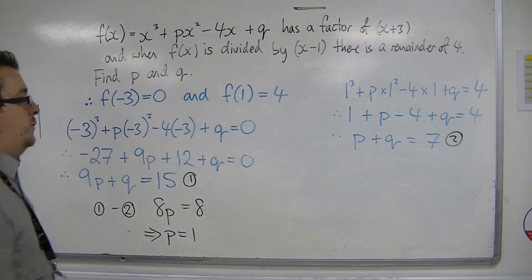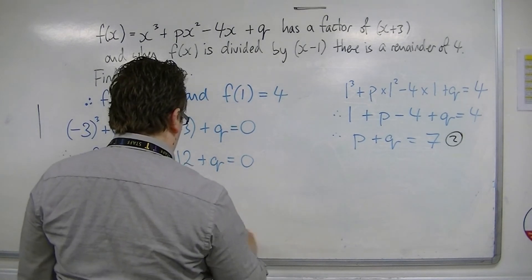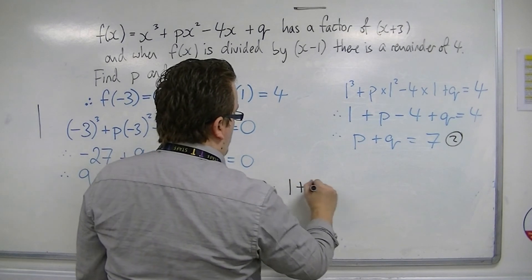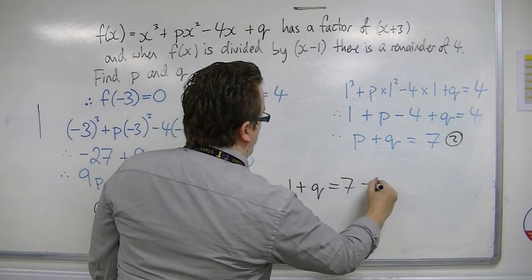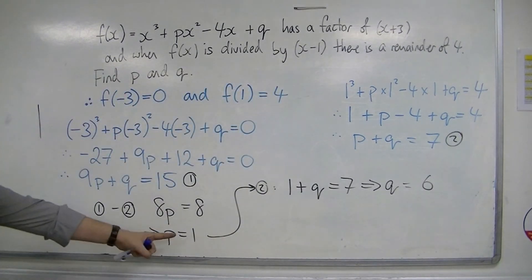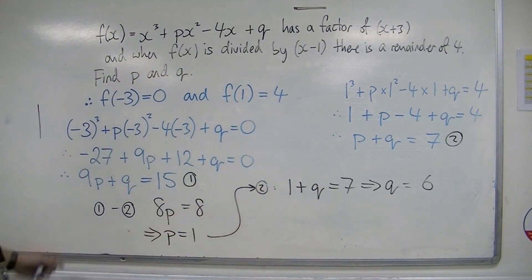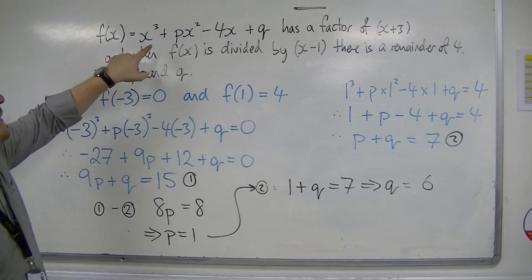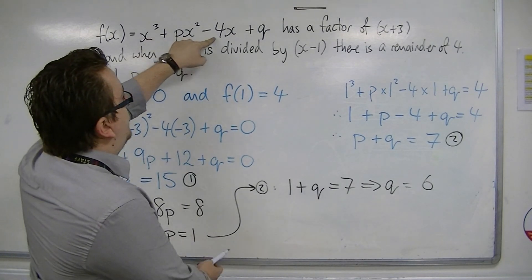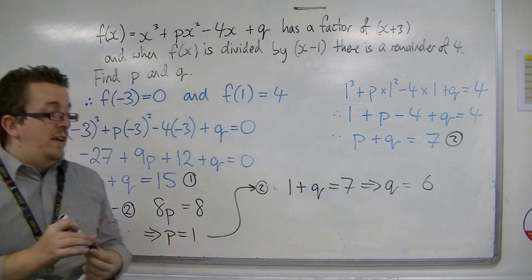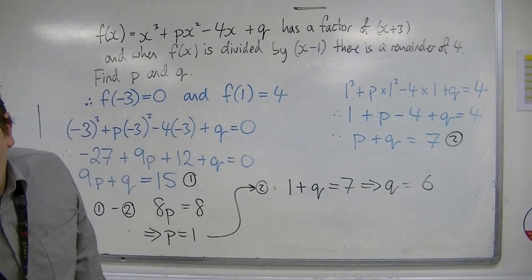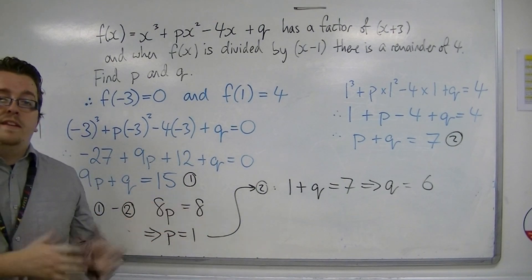And then if you substitute p as 1 into equation 2, we have 1 plus q is 7, so q equals 6. And so we have our two values of p and q. So the original equation is actually x cubed plus x squared minus 4x plus 6. And that's how the factor theorem and remainder theorem can be used to arrive at two simultaneous equations that you then need to solve.